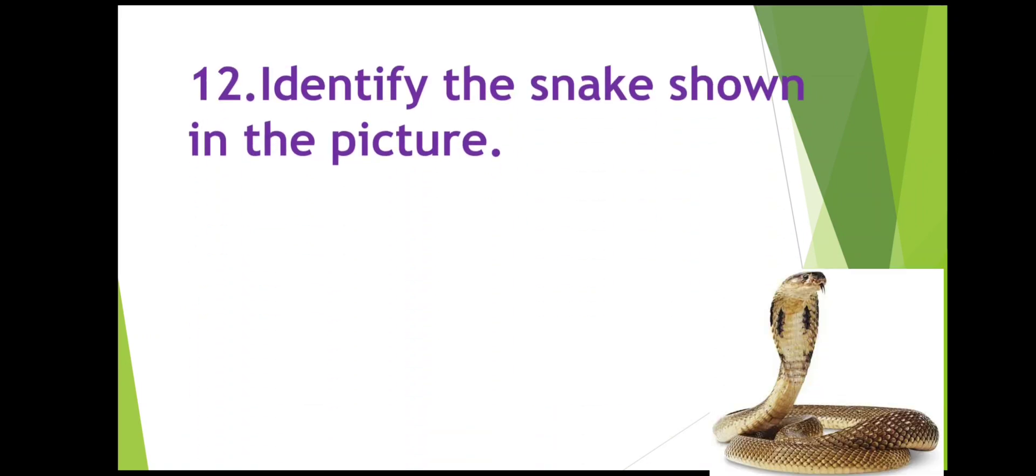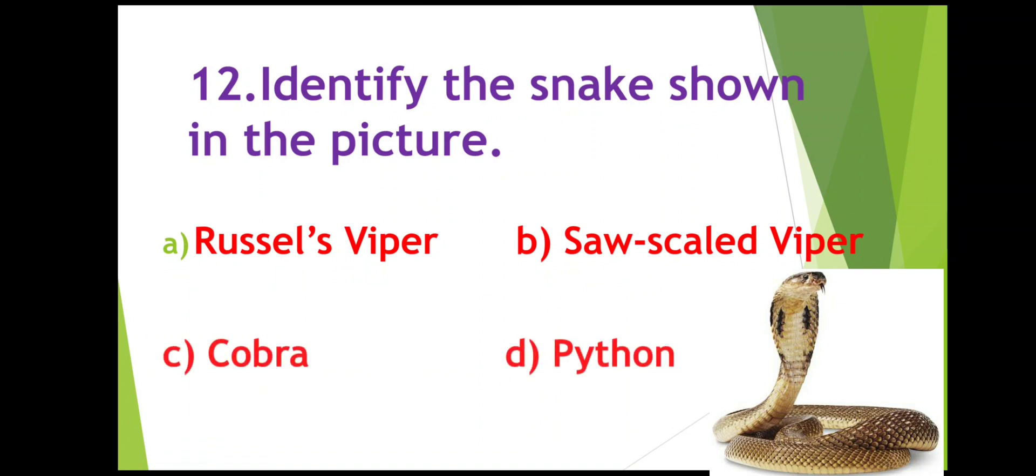Identify the snake shown in the picture. So here you can see a snake. You have to identify it. Is it a Russell Viper, Saw Scaled Viper, Cobra, or Python? Can you identify it? Yes, it's a Cobra. You can see the special design on the neck of the snake. It is found in Cobra, so it is a Cobra.